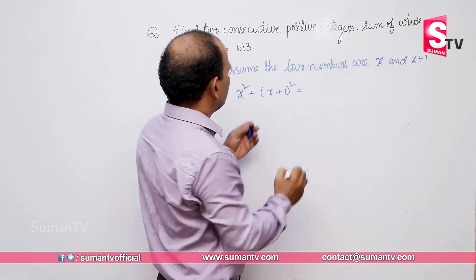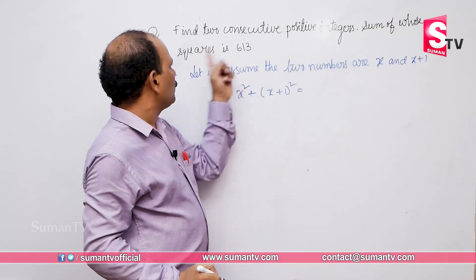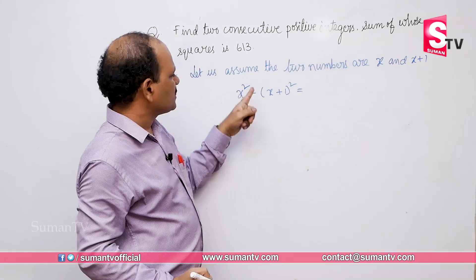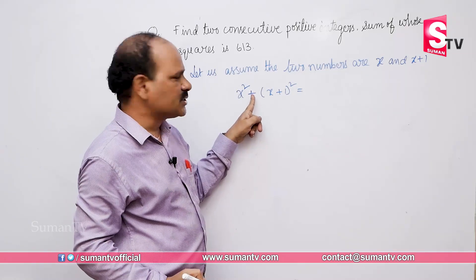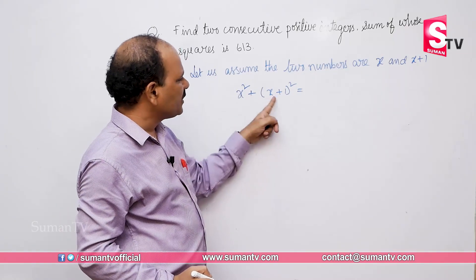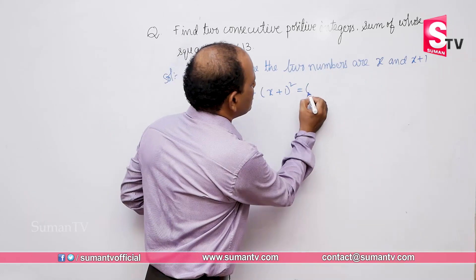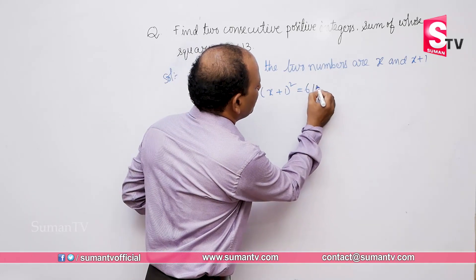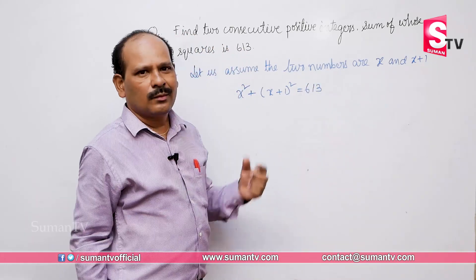The sum of whose squares is equal to 613. The first number squared is X square, the second number squared is X plus 1 whole square. The sum of these squares is equal to 613.